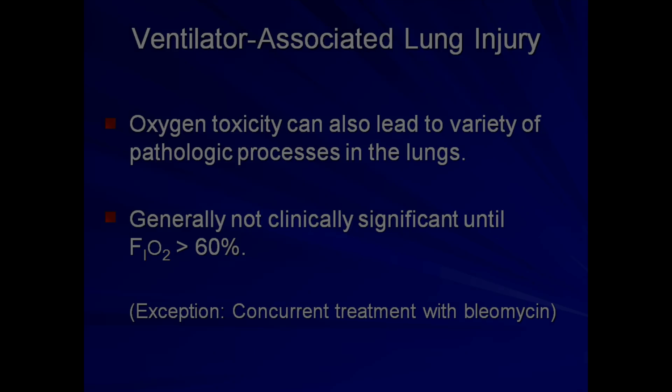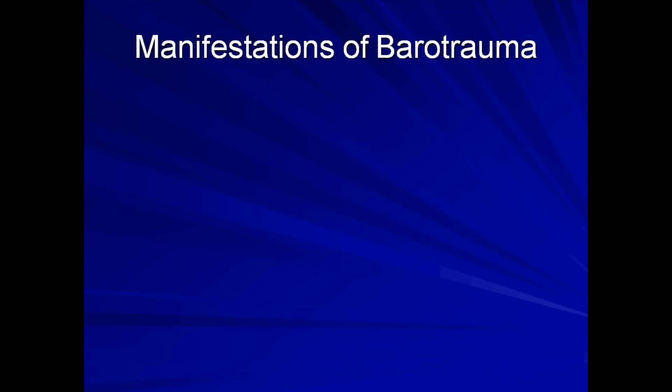The most common manifestation of barotrauma is a pneumothorax, where gas leaking from a ruptured alveolus enters the pleural space, where it can hinder ventilation. In severe cases known as a tension pneumothorax, the increased intrapleural pressure becomes severe enough to impair venous return and can precipitate hypotension and even a PEA arrest.